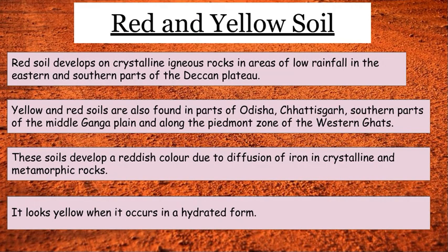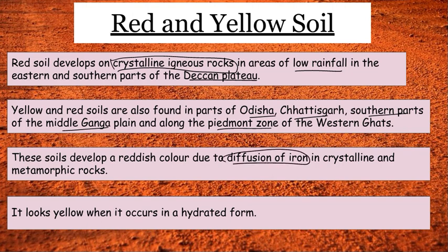Next is red and yellow soil. Red soil develops on crystalline igneous rocks in areas of low rainfall, such as the eastern and southern parts of the Deccan Plateau. Red and yellow soil is also found in Odisha, Chhattisgarh, southern parts of the middle Ganga plain, and the Piedmont zone. It is known as red due to high iron concentration, and yellow when the iron is hydrated.